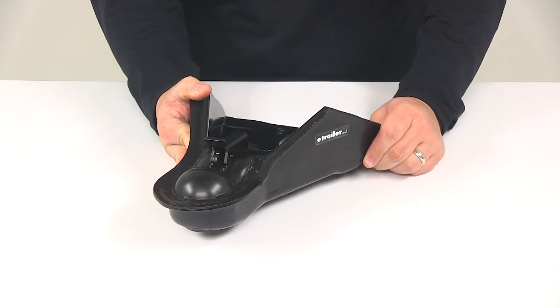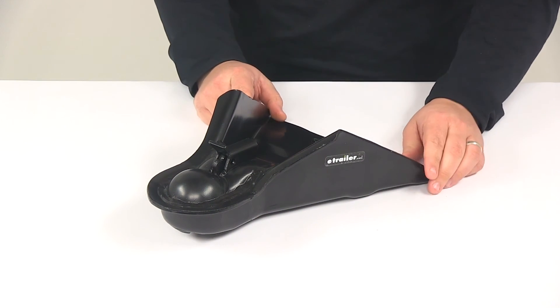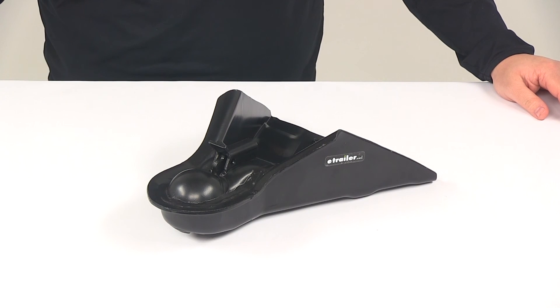If you're in need of a coupler pin or a coupler lock, they are sold separately and can be found right here at eTrailer.com. That's going to do it for today's look at the underslung A-frame trailer coupler for a two and five sixteenth inch hitch ball.